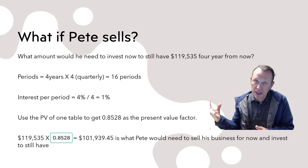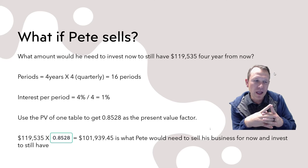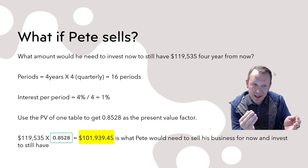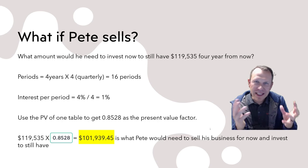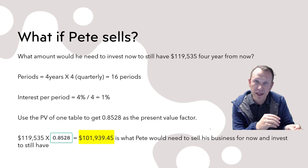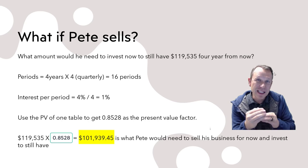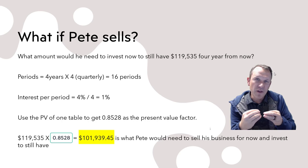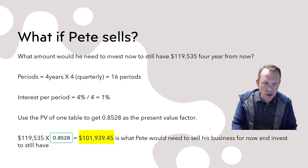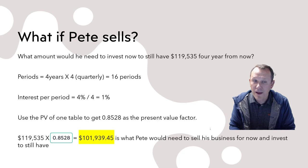We take the future value of $119,535 and discount it back to today using the factor of 0.8528, which gives us $101,939.45. That is the amount Pete has to sell the business for now in order to make selling worthwhile versus holding on — all other risks being equal. It's the price that, if invested at 4% quarterly compounded for four years, would end up with the same value as keeping the business and getting that 12% appreciation. So our answer is $101,939.45. Hopefully that helps you with the problem set — talk to you later, thanks, bye.